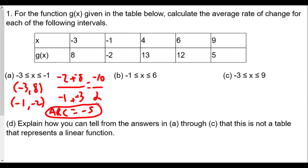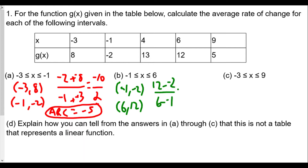For the second interval between negative 1 and 6, the coordinates are negative 1 comma negative 2, and when x equals 6, g(6) equals 12. Setting this up as slope: 12 minus negative 2 over 6 minus negative 1, which gives us 14 over 7, and our simplified average rate of change is positive 2.